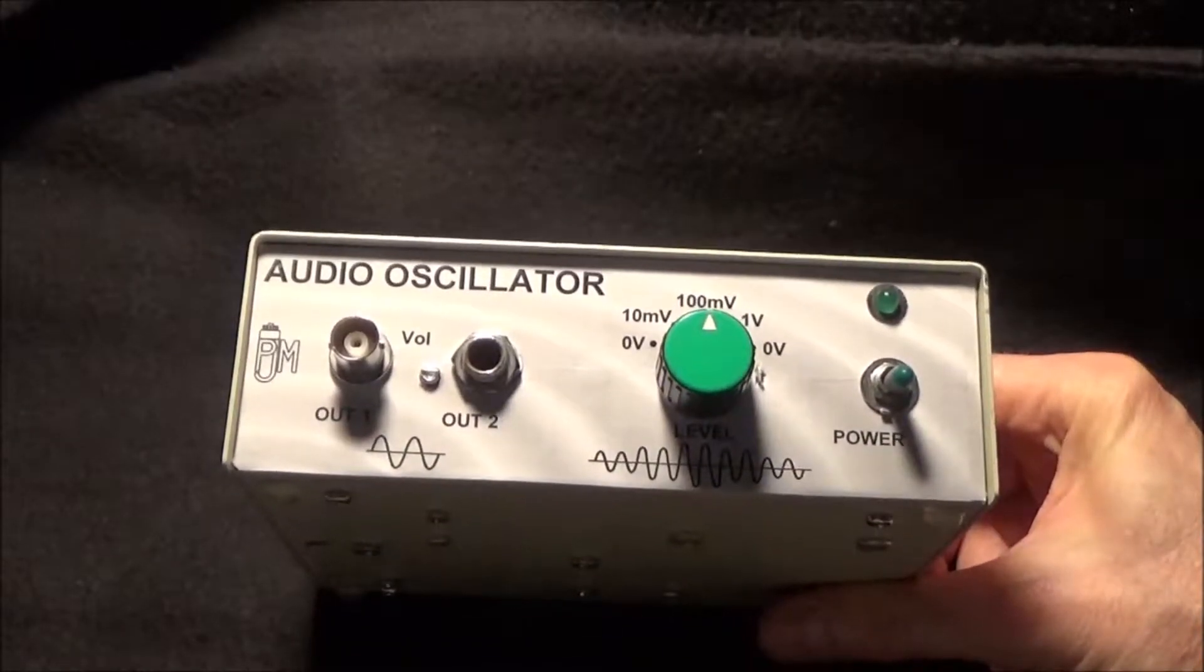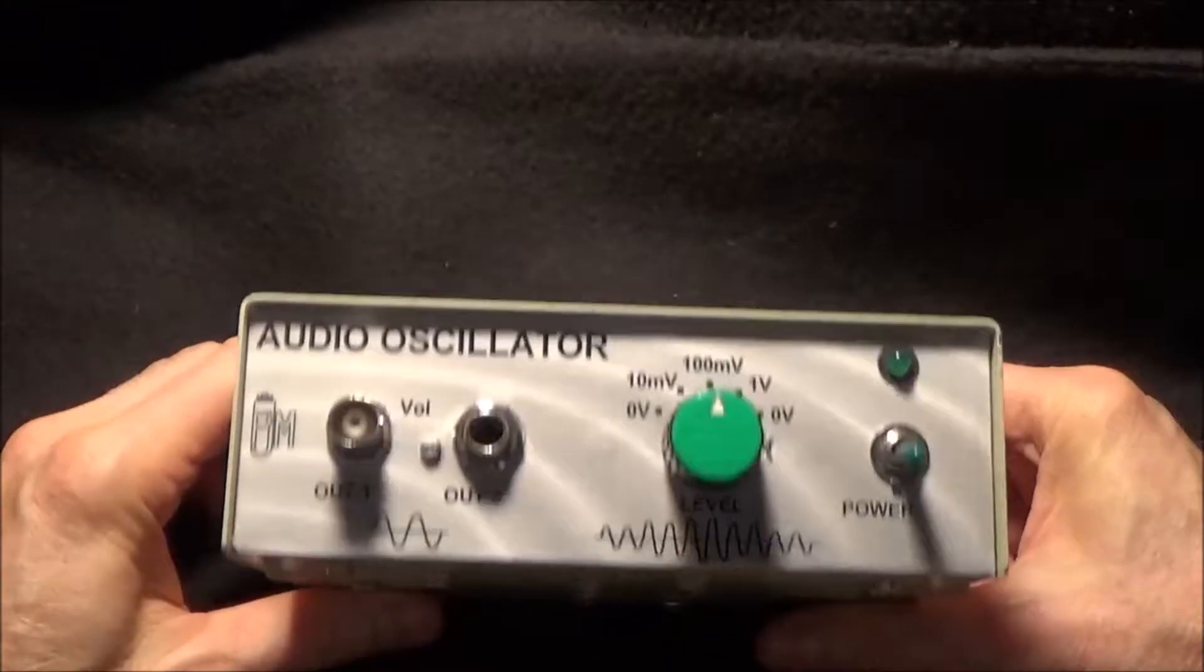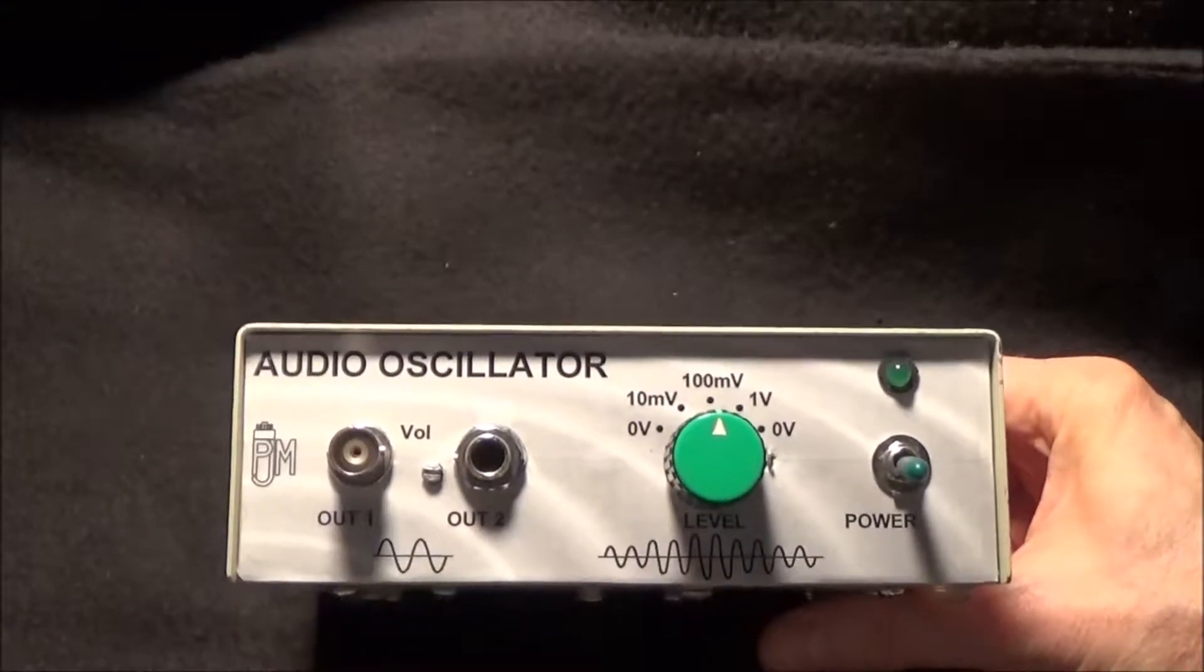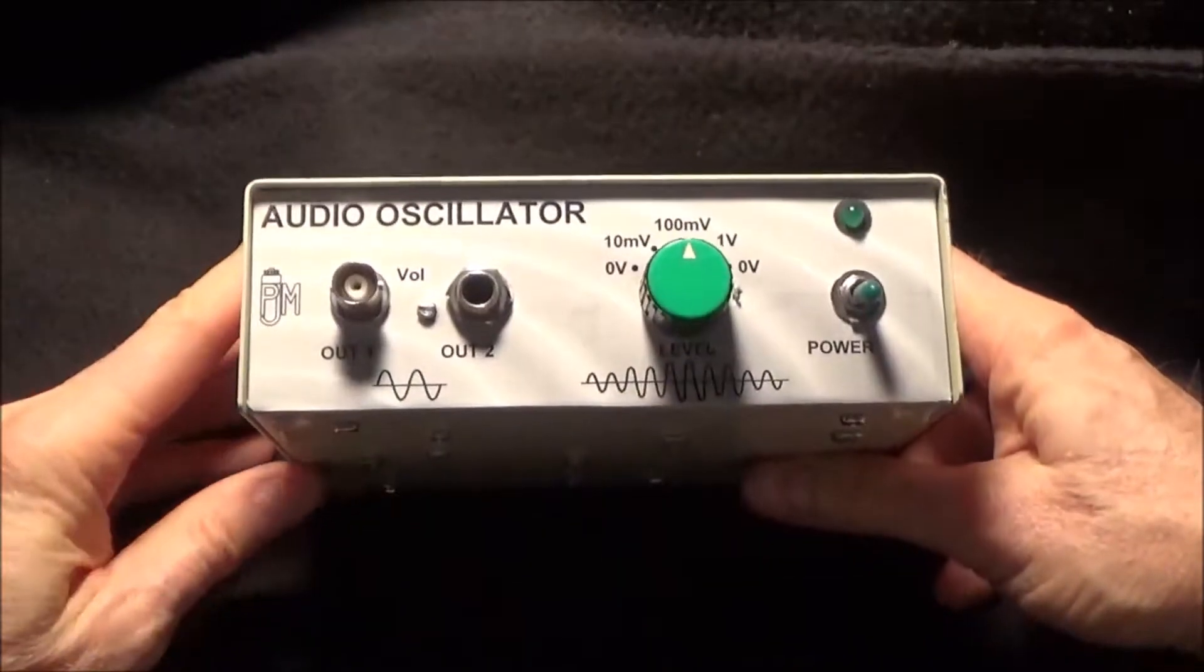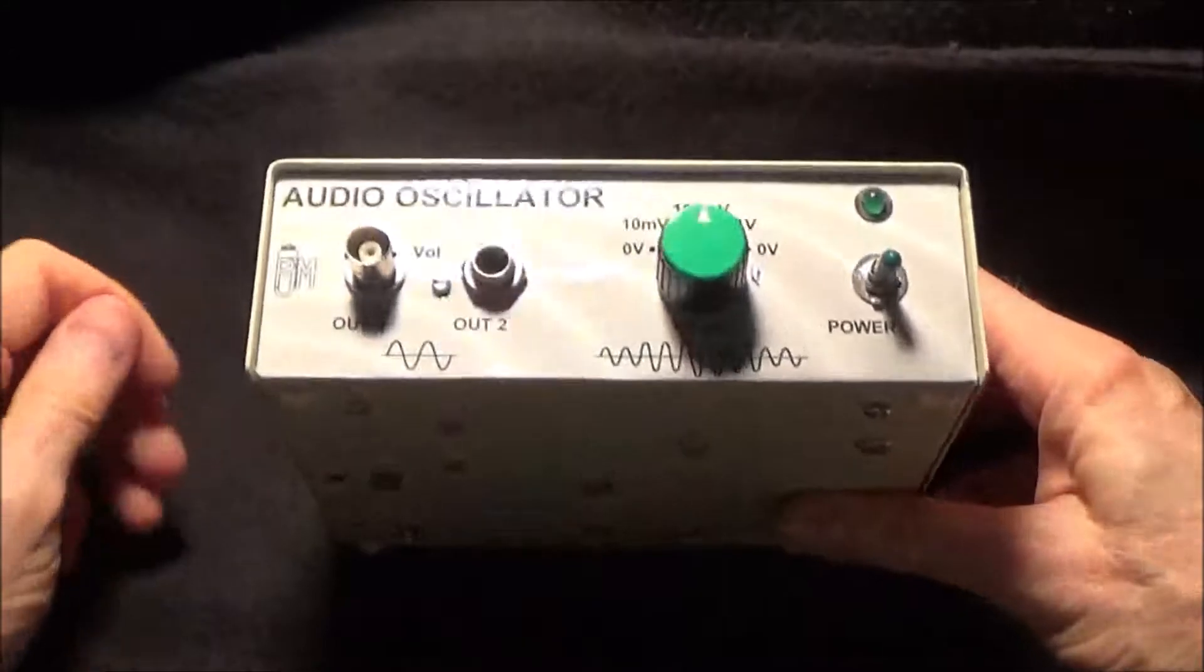You can find those on eBay, like an old Heath SG 1271 or something like what I have. That is also a real handy thing to have. It also does sawtooth and square waves. But this, for just a general test tone, just quick, does my circuit pass a signal?